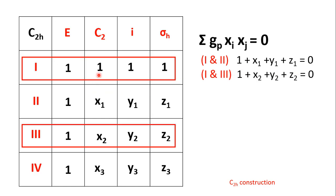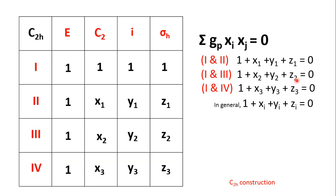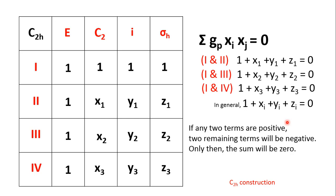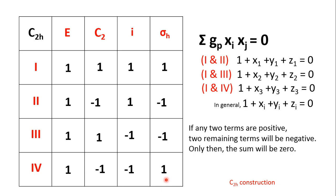Taking irreducible representations 1 and 3, we similarly get 1 + x2 + y2 + z2 = 0. In general, 1 + xi + yi + zi = 0. Since the sum of four terms is 0 and the first term is +1, if two terms are +1 the remaining two terms must be −1. So in each irreducible representation, two characters will be +1 and two will be −1.